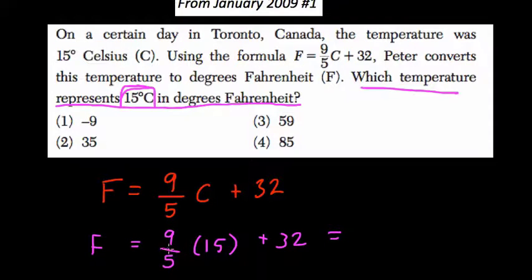9/5 of 15. We can do 9 times 15 divided by 5. If you think about 9 times 15, whatever number that is, 90 and 45 or 135,